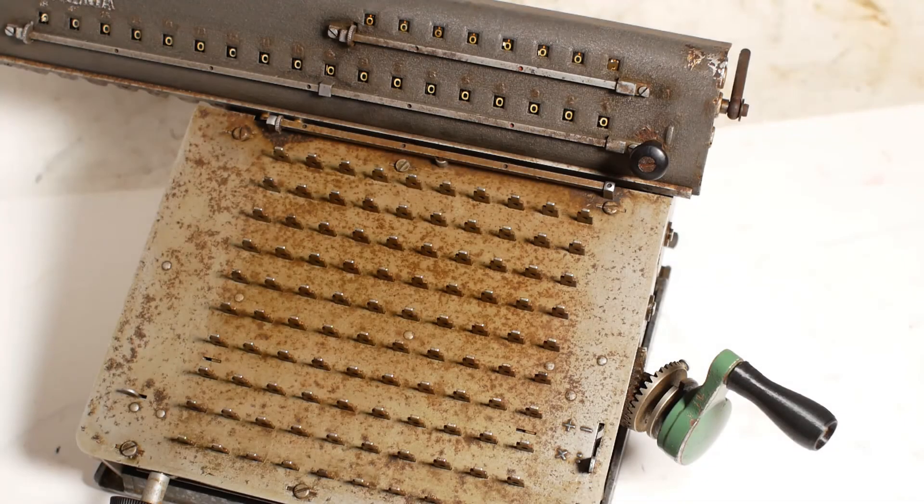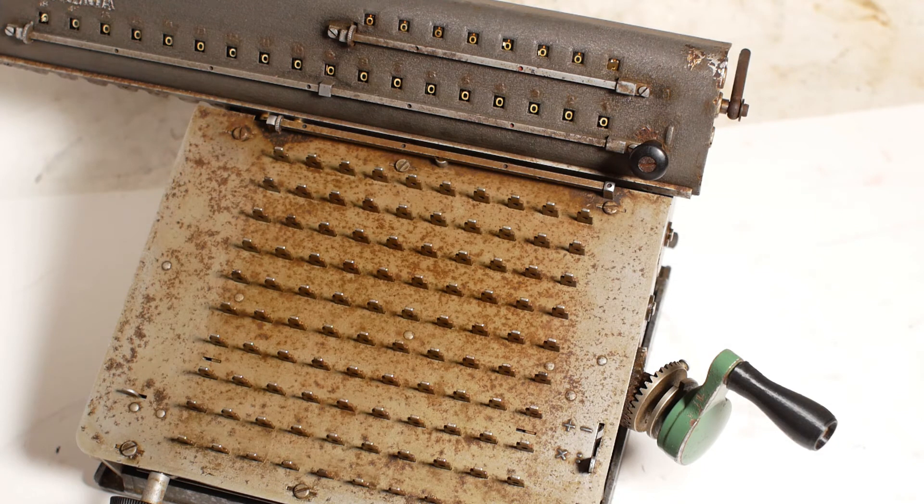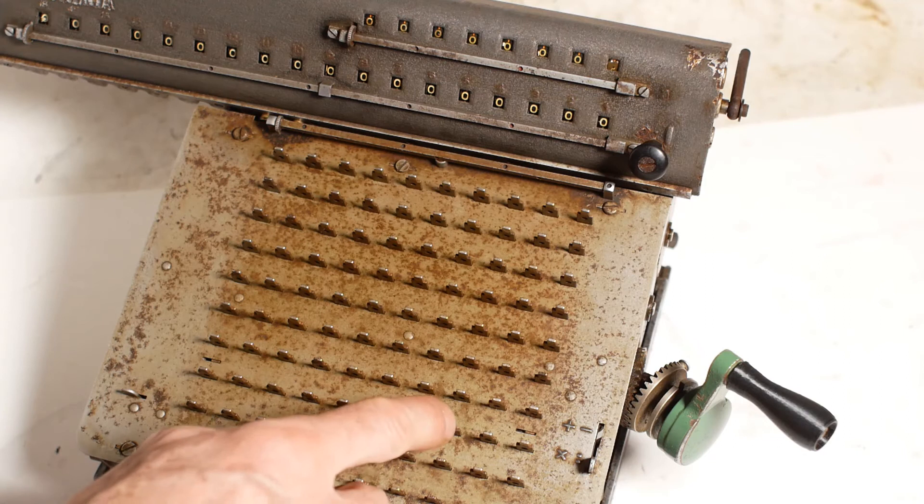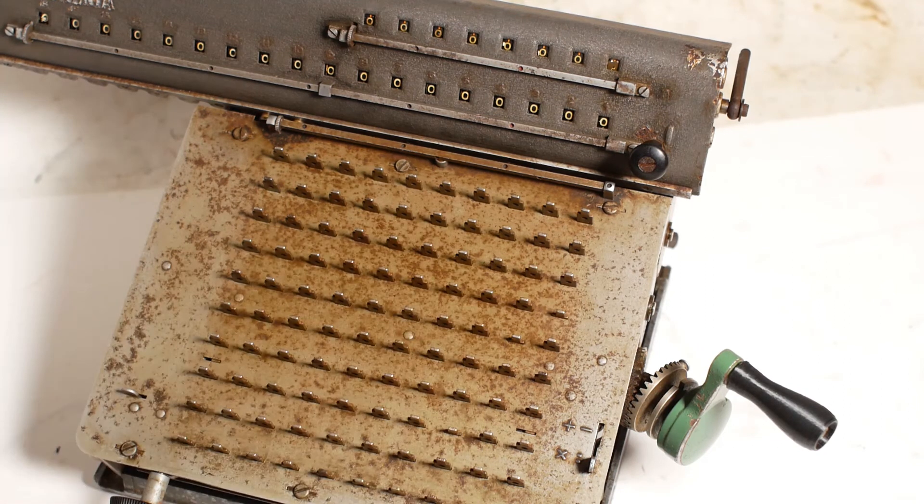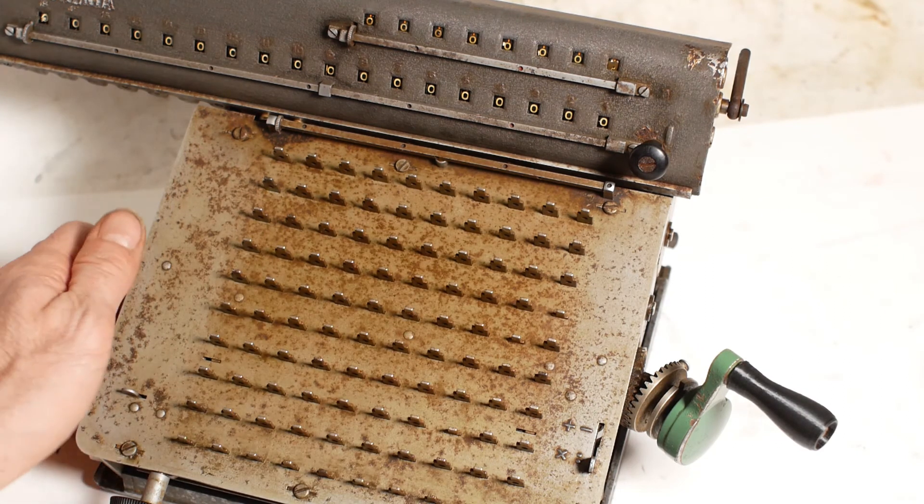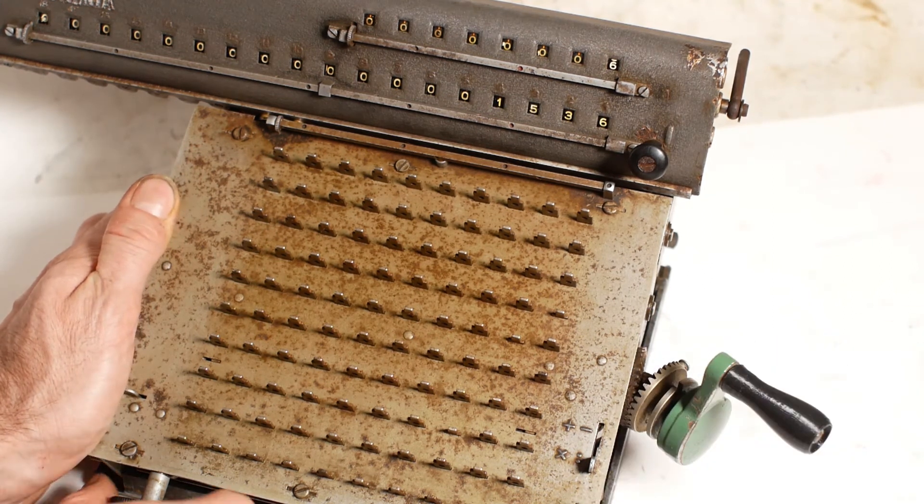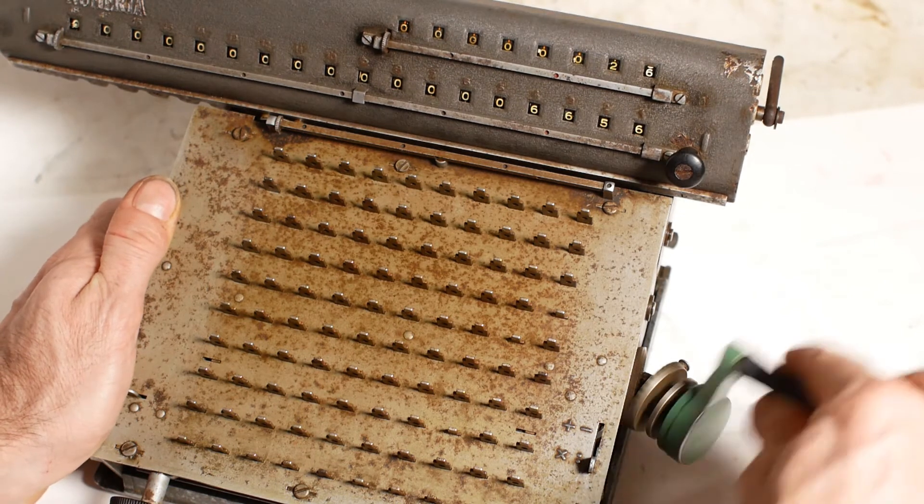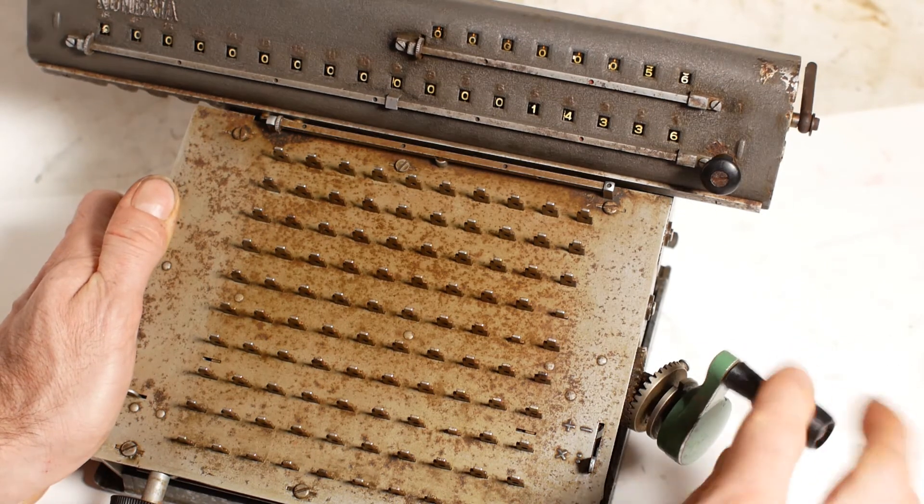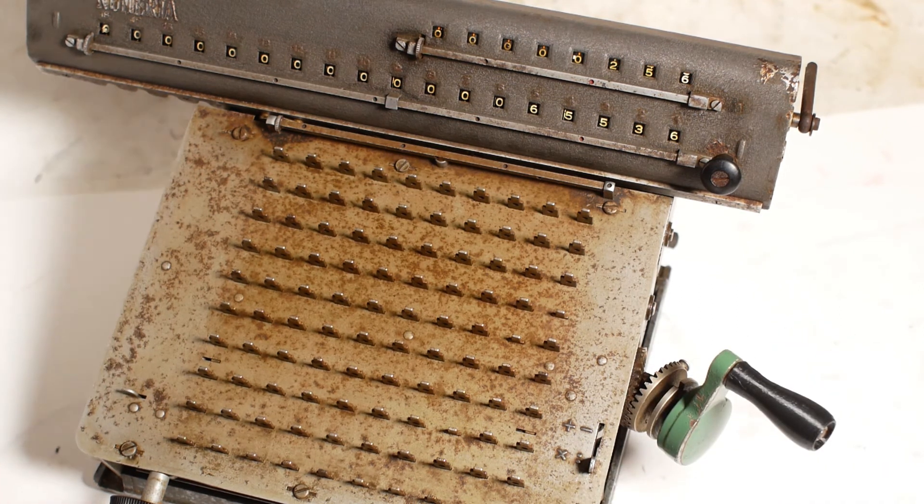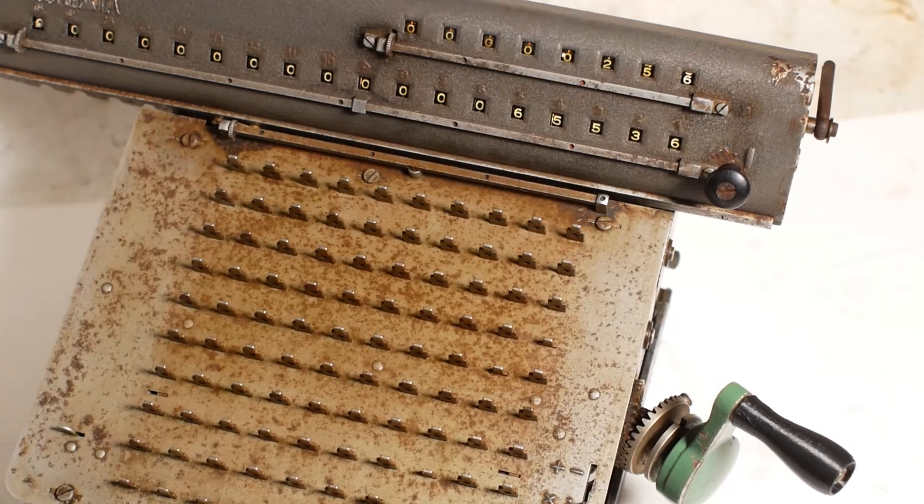I've fitted the carriage back onto the machine, now to give it a quick test. If I want to multiply 256 by 256, first I enter the 256 onto the keyboard, which is easier said than done without the keytops. Then in the units position, I turn the crank handle six times. Then shift the carriage one place to the right, and in the tens column, turn the handle five times. And finally in the hundreds column, turn the crank handle twice. Giving us an answer of 65,536.